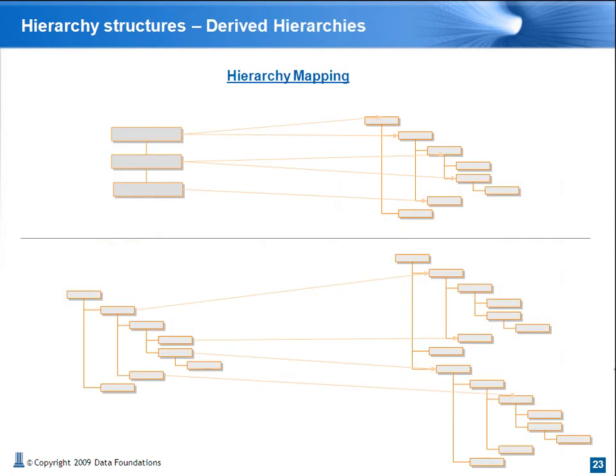Finally, derived hierarchies, or hierarchy mapping — sometimes necessary, but should be avoided. The scenarios we have seen is where we create a three-level management hierarchy structure from an inherent ragged management hierarchy. In a more complex example, a global reporting hierarchy mapped to multiple instances of local classifications so as to enable global reporting.